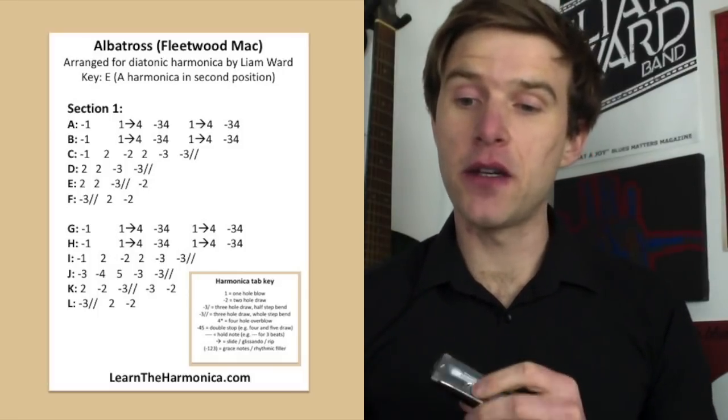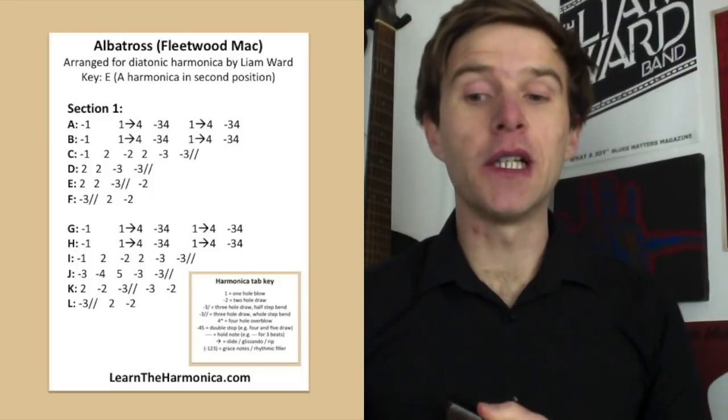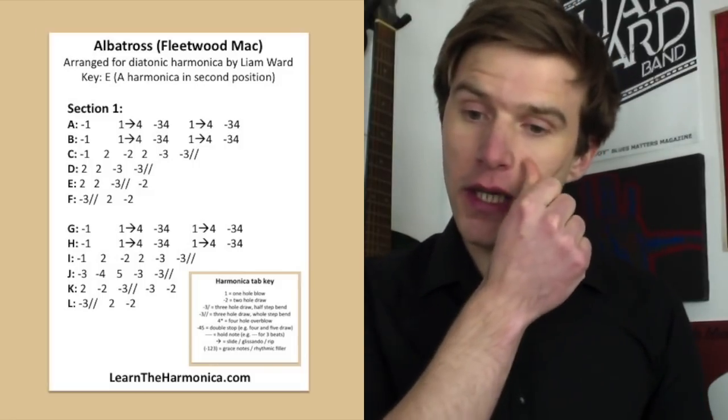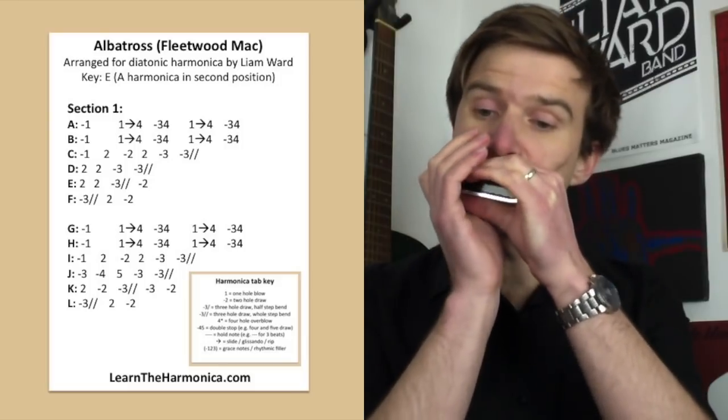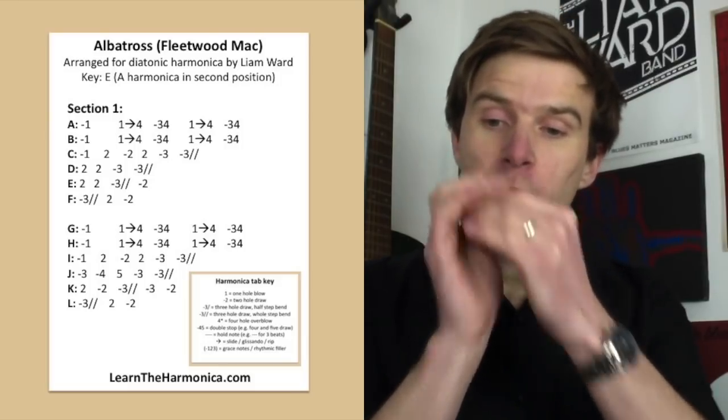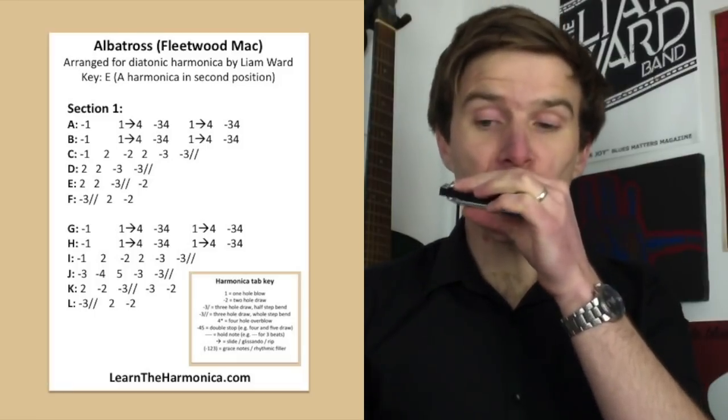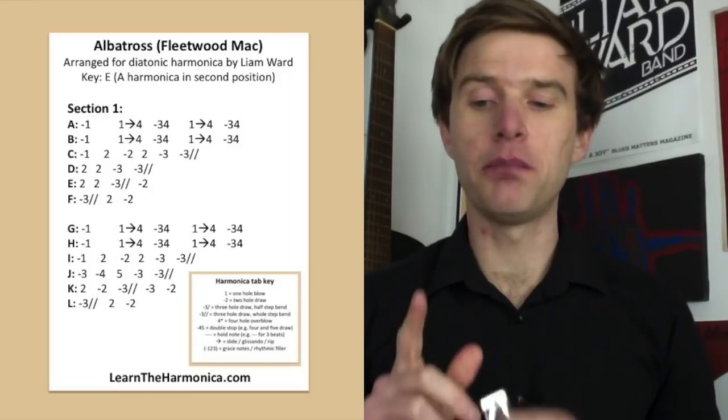So lines G and H are the same as A and B, and then we have line I, the same as line C. So again, a repeat. It changes here though. So line J instead of line D, which was two blow twice, we are finishing with the same two notes, three draw and three draw full step bend, but before that...